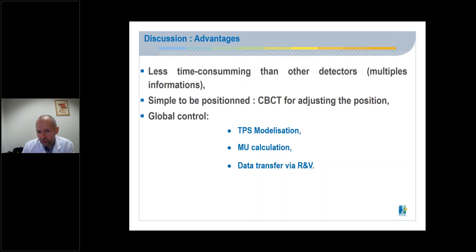What are the advantages of delta-4 phantom plus? Firstly, it's less time-consuming than other detectors, because it allows multiple information in one area. It is simple to position on. You can use CBCT for adjusting the position on the action. It's very precise. And it allows a global control. You can check the TPS modelizations, the MU calculations, and so the data transfer via record and verify.